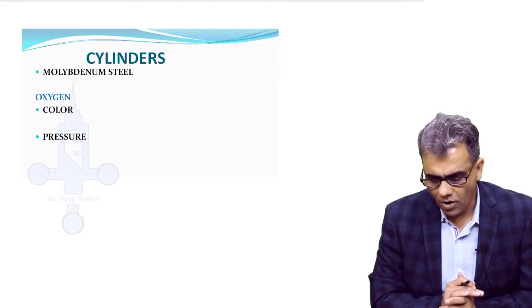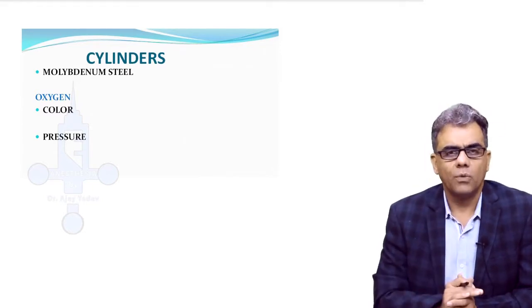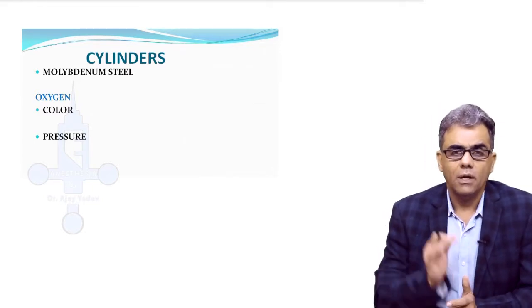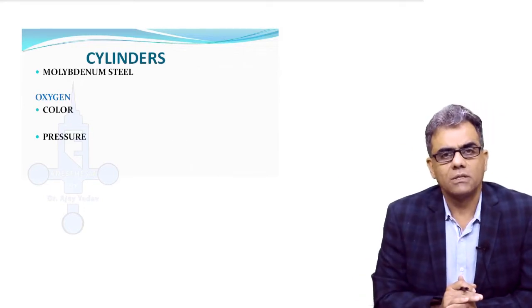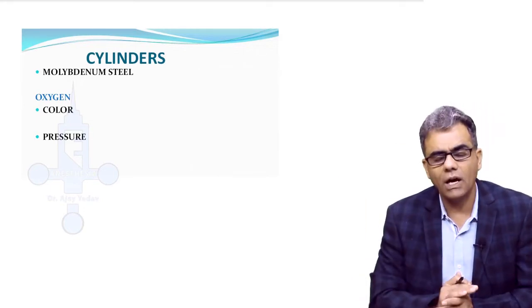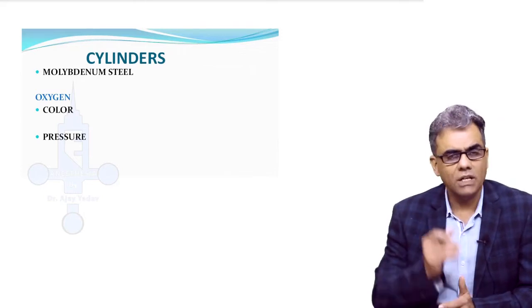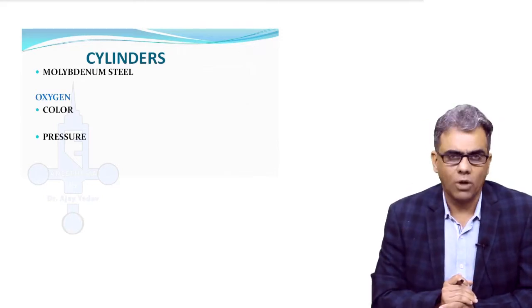Cylinders are made up of molybdenum steel. Why are they made up of molybdenum steel? Because molybdenum steel can withstand very high pressures, and pressure in cylinders is very high. To bear that pressure we need a strong metal, and that is molybdenum steel.